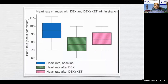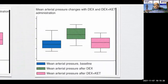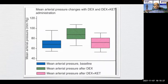Regarding hemodynamics with dexket: heart rate changes with dex alone versus dexket administration show that with the dexket combination, heart rate is very nicely maintained compared to dex alone. Similarly, mean arterial pressure — there can be initial hypertension when dex is used alone, but with dexket it is usually well maintained.